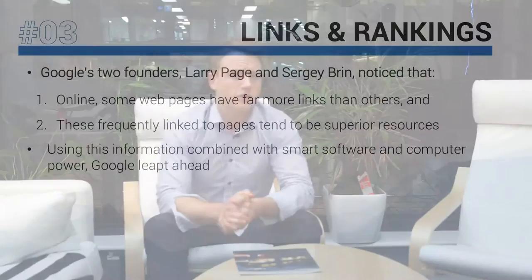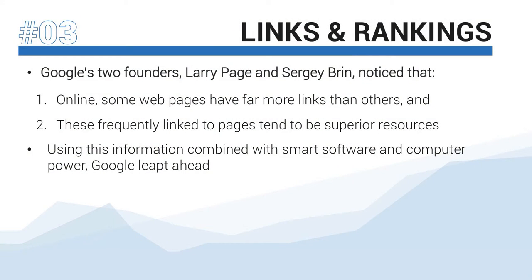For Google, links play a particularly important role in their story. Beyond using links to discover content, the founders of Google made two very important observations that would go on to establish their search engine as the best in the market. The first observation was that online, some web pages have far more links than others. And the second observation: these frequently linked-to pages tend to be superior resources.